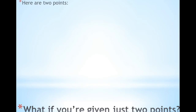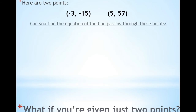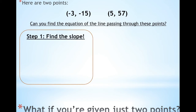What if you're given just two points? Here are simply two points. Can you find the equation of the line passing through these two points? The first thing you should already know how to do is find the slope. So you call this x1, y1, and you call this x2, y2.